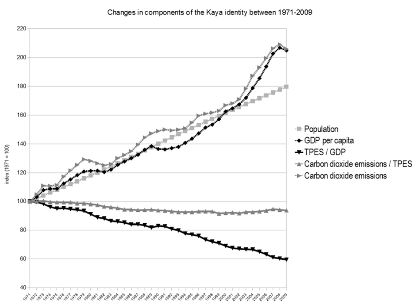One of the economic aspects of climate change is producing scenarios of future economic development. Future economic developments can affect how vulnerable society is to future climate change, what the future impacts of climate change might be, as well as the level of future GHG emissions.